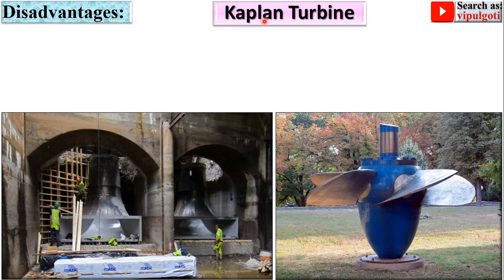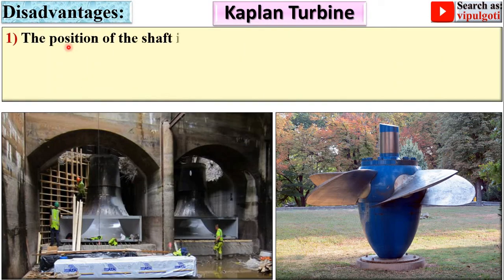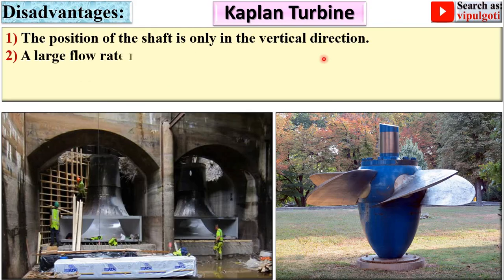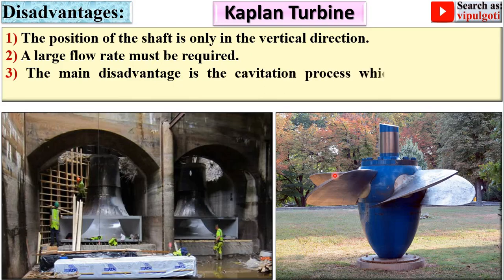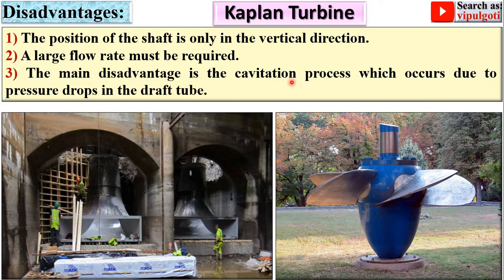Disadvantages of the Kaplan turbine: The shaft position is only in the vertical direction. A large flow rate must be required to run the turbine. The main disadvantage is the cavitation process, which occurs due to the pressure drop in the draft tube.